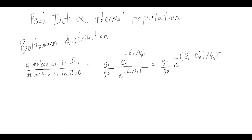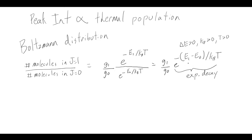Let's think about the exponential term. E1 is higher in energy than E0, so the delta energy is positive. The Boltzmann constant is positive, and temperature in Kelvin is positive. So this is clearly an exponential decay, which is what we expect from Boltzmann populations — the ground state should be the most populated, and at higher energy states we expect lower populations. So exponential decay is what we get from this part, if we neglect the degeneracy, which also factors into the overall distribution.